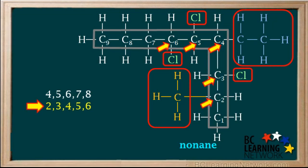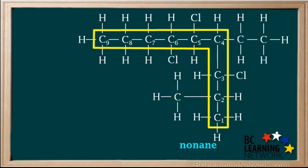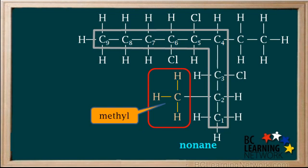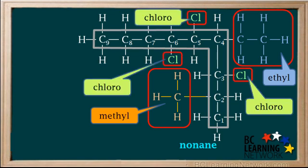And 2, 3, 4, 5, and 6 is a lower combination than 4, 5, 6, 7, and 8. So this way of numbering the carbon atoms is correct. Now we need to look at the groups attached to this chain and add them to the name of the compound. CH3 is called a methyl group. CH2CH3, or C2H5, is called an ethyl group. And we also have three chloro groups attached to this chain.